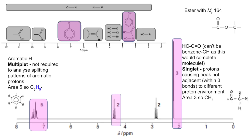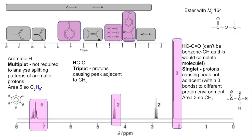The next peak I'm going to look at is this one here. Looking at the data sheet, our options point to an H–C–O environment — the other part of the ester group, with hydrogens singly bonded to an oxygen. The fact that it's a triplet means there is an adjacent CH2 group in a different environment, and the area of two means there are two protons in this environment. So it looks like we have a CH2 next to another CH2 that's bonded to the oxygen, and we must have this feature in our molecule.